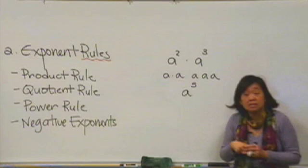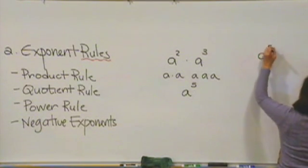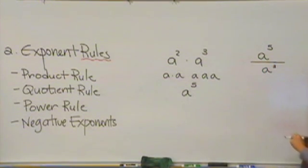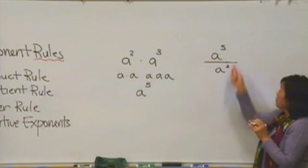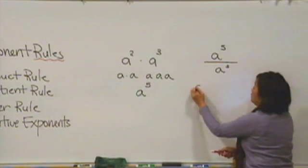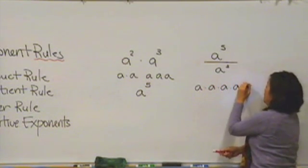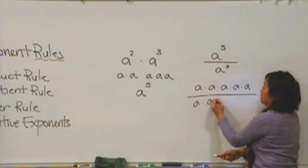Let's take a look at an example of a quotient. Suppose we had something like a to the fifth divided by a to the third. Again, exponents are simply abbreviations. So, when we write a to the fifth, that means a multiplied by itself five times. And when we write a to the third, it means a multiplied by itself three times.